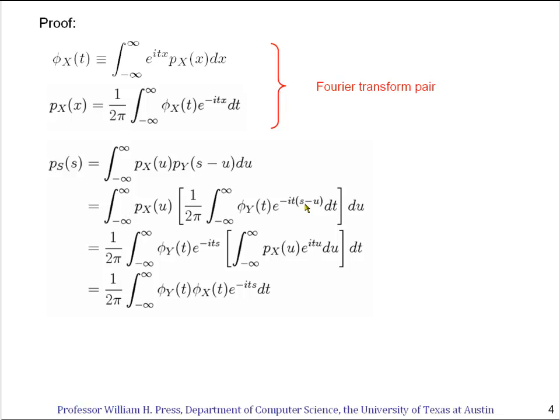Now, that standard trick beloved of proofs like this, we simply interchange the order of integration and rearrange some of the factors. So I'm going to bring the phi_y out here. It doesn't depend on u, so I can bring it out through the u integral.